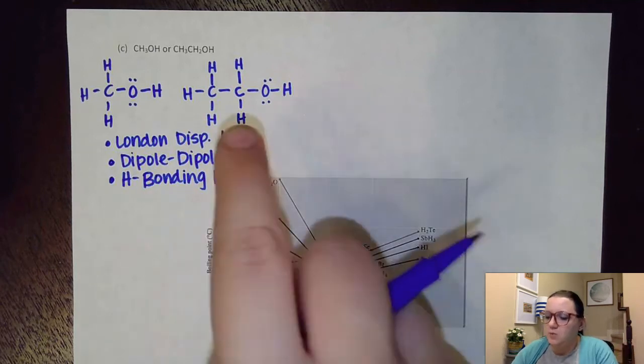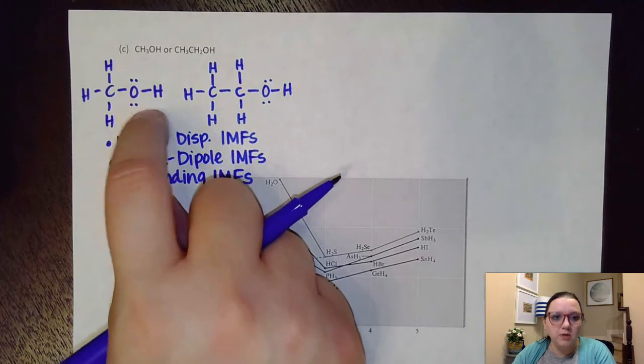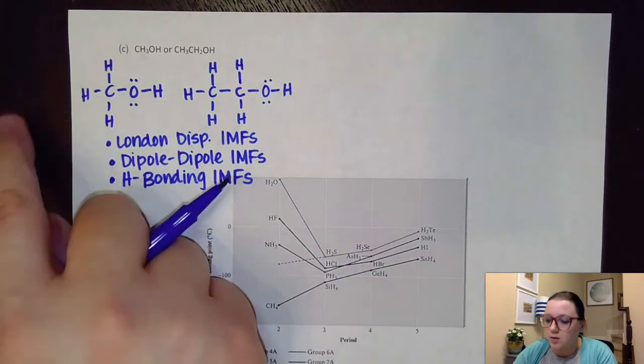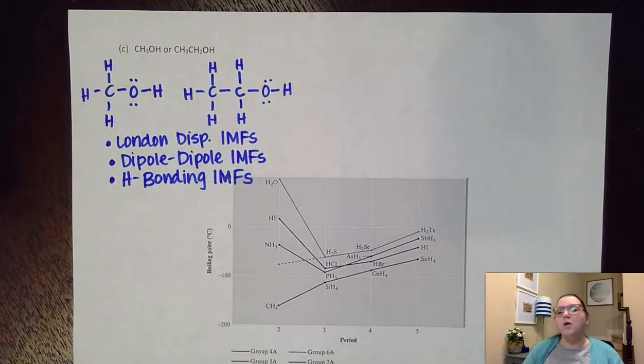For example, let's say one of these molecules had a location for hydrogen bonding on this side, but also on the other side of the molecule. Having it multiple places would mean that I would have more stronger attractions. And so that would help my strength. But both of these only really have one location where hydrogen bonding IMFs could form with another molecule.